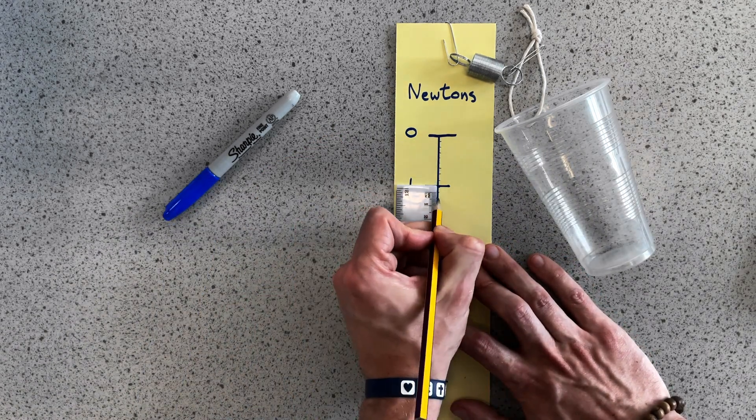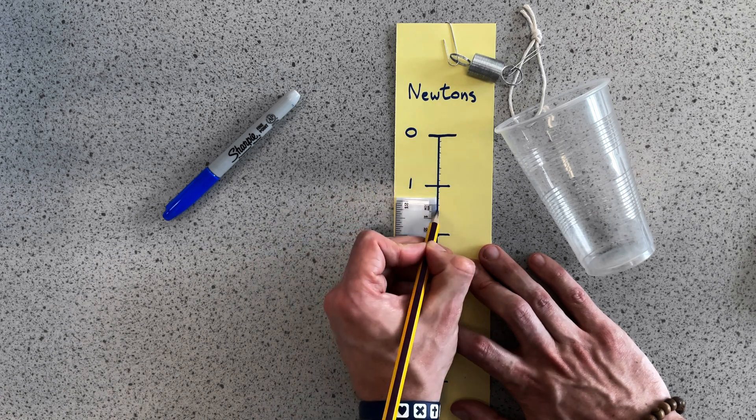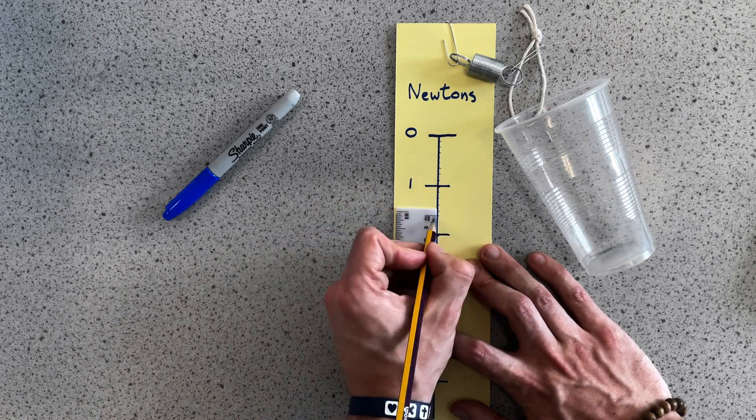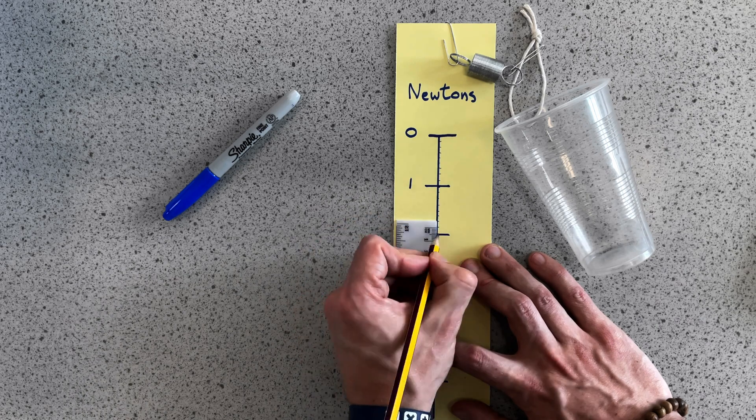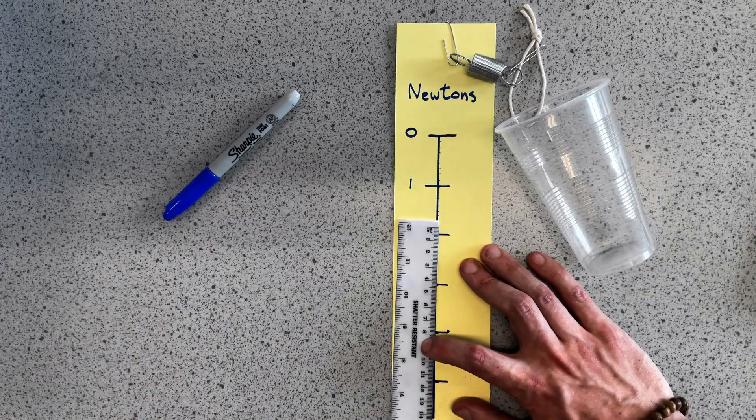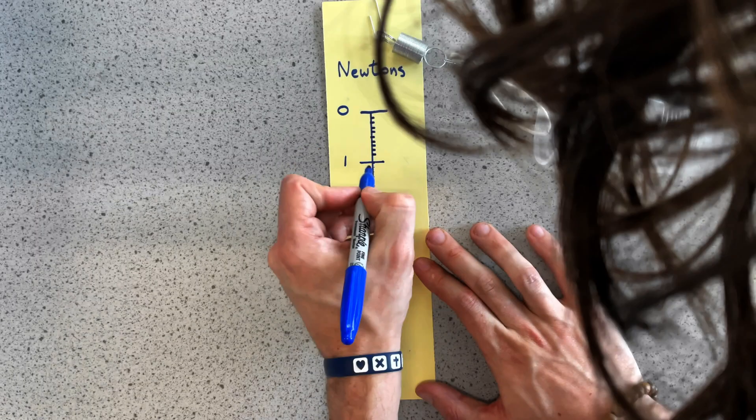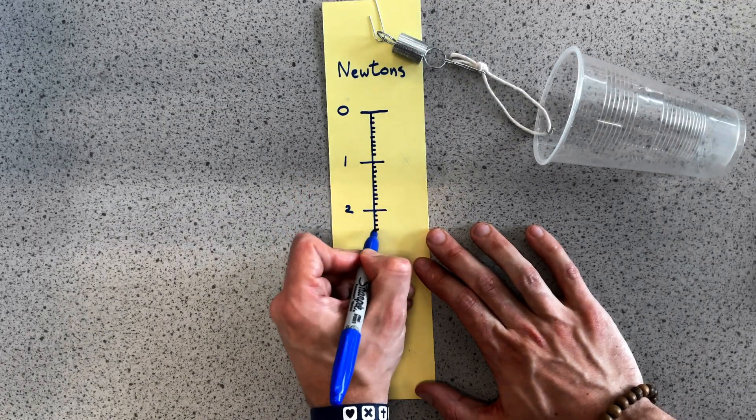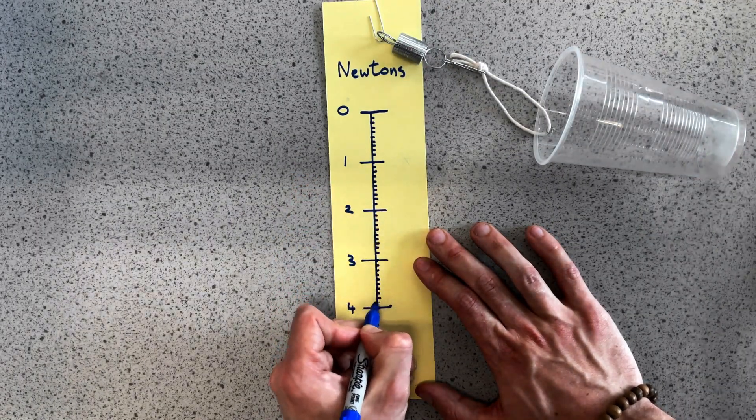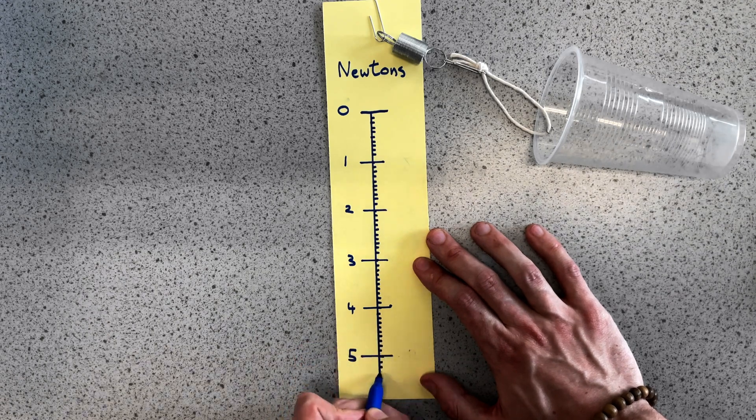To do this I take the distance between my lines which for me is 3.56 and then I divide that by 10 which gives me 0.356. So I'm going to try and put marks every 0.36 centimeters which is roughly three and a half millimeters and I'm going to do that all down my scale.